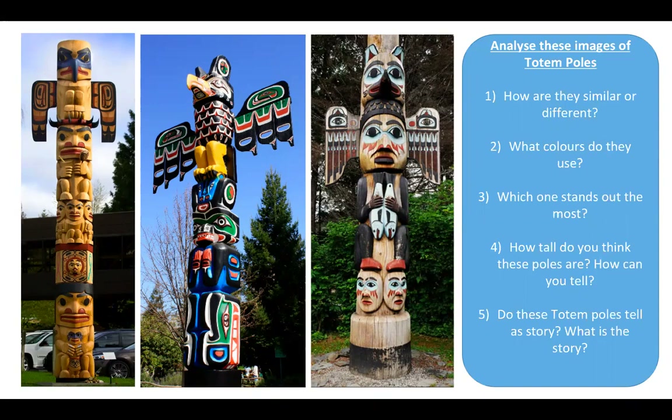I want you to look carefully at these photographs and have a go at answering these questions. You don't have to write the answers down — you can just think about them as we're looking together. Analyse these images of totem poles. Number one: how are they similar or different? I can see the one on the left has some colour, but the one in the middle looks very colourful with lots of black that really stands out. The other one on the right looks more similar to the one on the left. I can also see that the man in the middle is holding fish, so maybe this is about being grateful for having the land to live on.